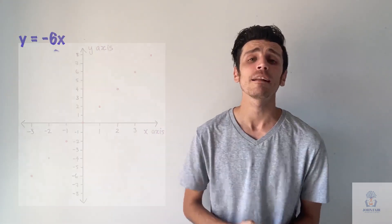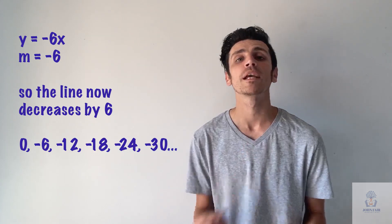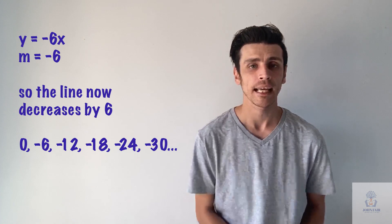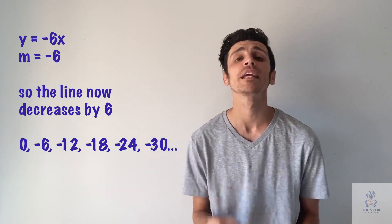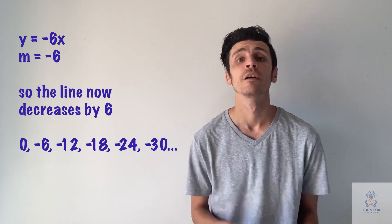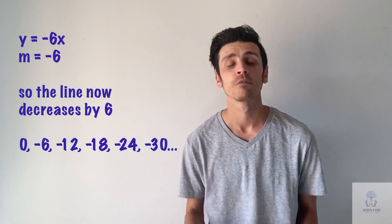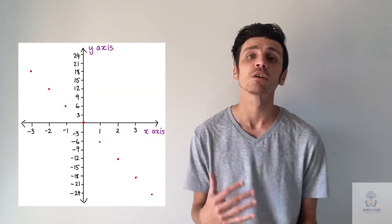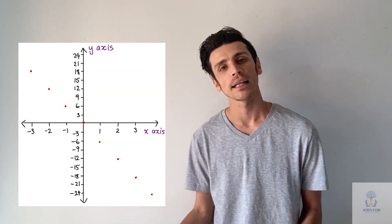If we have a negative number, now your line would be going downwards. So let's say, for example, if we had y equals negative 6x. So now this line would be going downwards by 6 every time. So you would have 0, negative 6, negative 12, negative 18, negative 24, negative 30. So see how it's constantly going downwards by 6.